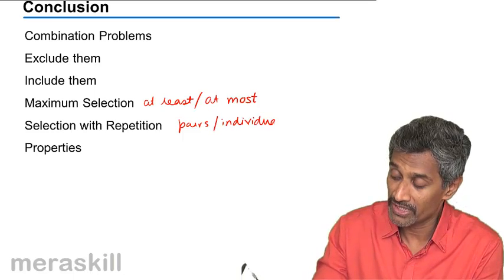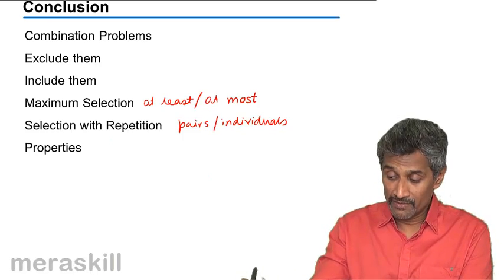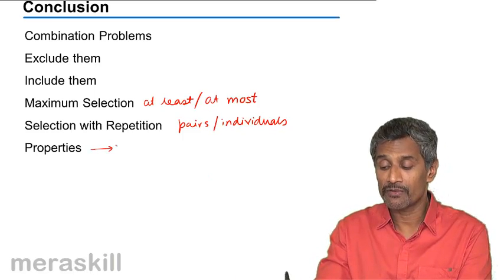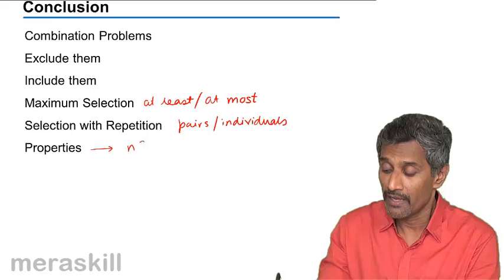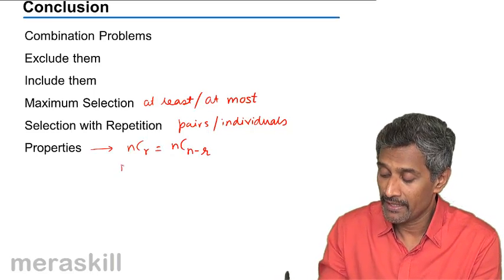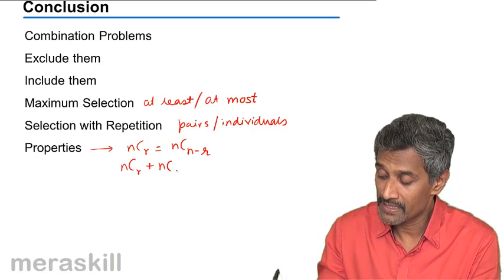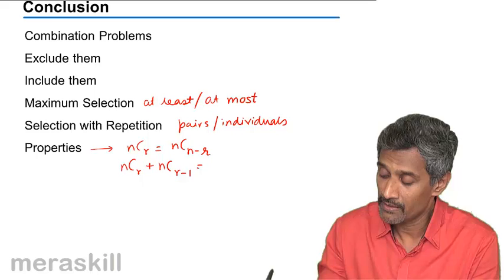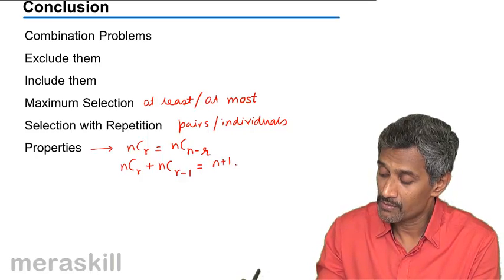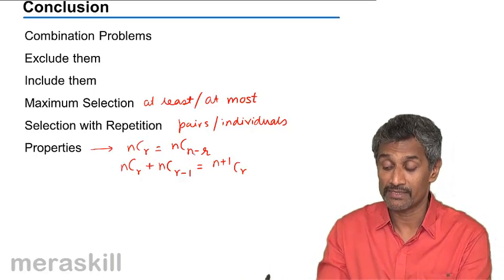A particular word has been given and you need to select pairs and individuals. And we did, lastly, a number of questions using the property nCr is nC(n-r) and nCr plus nC(r-1) is n+1Cr. We did these kind of properties, we used questions based on these things.